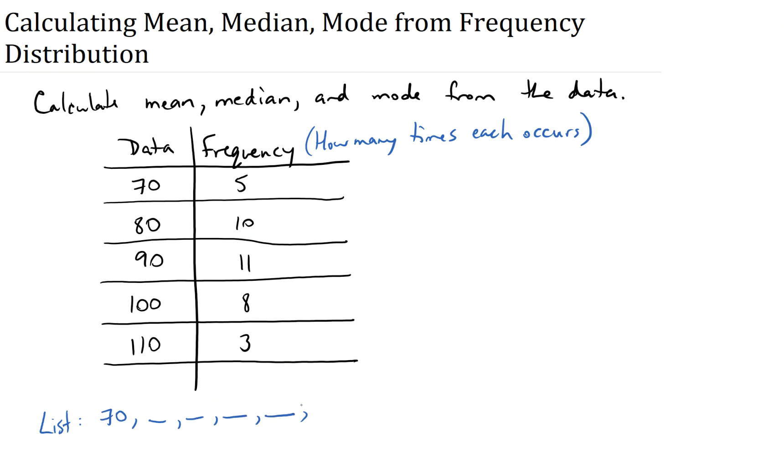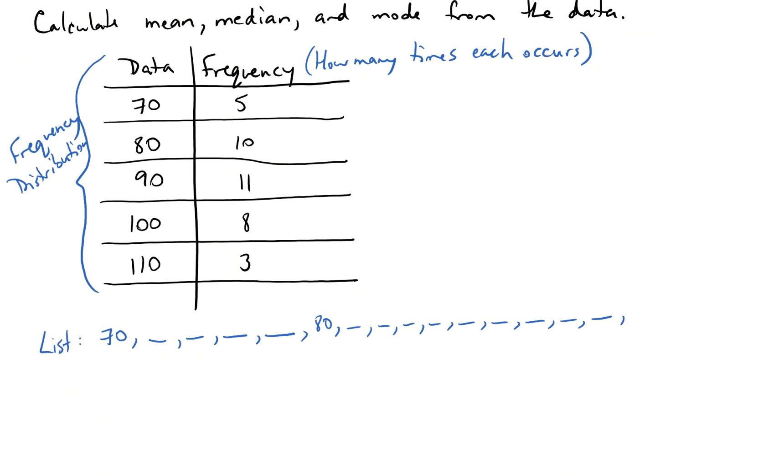I'm just not going to write them all out. That's the whole point of the frequency distribution. So this up here is called frequency distribution. Then I'd have 10 80s. So I'd have 80, and I'd have nine more. You can see why you don't want to list all of these out. Then I'd have 11 90s.